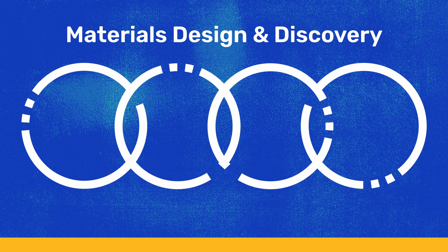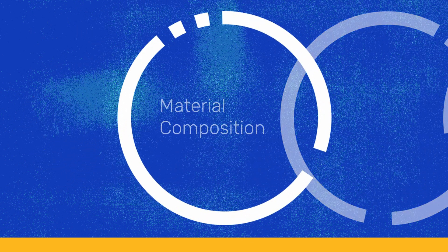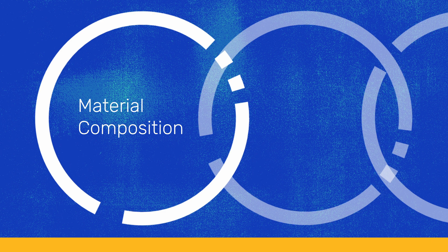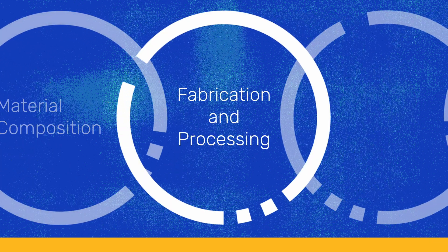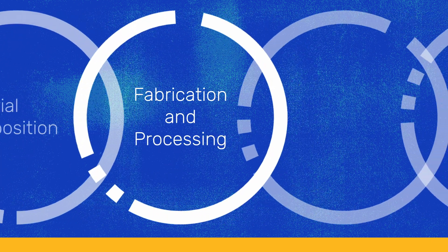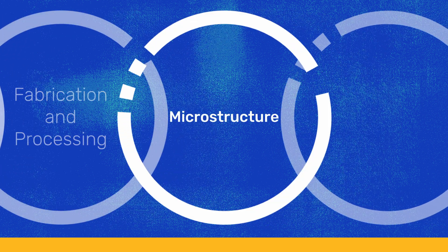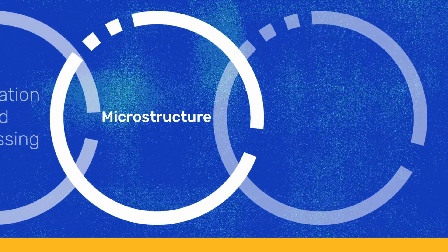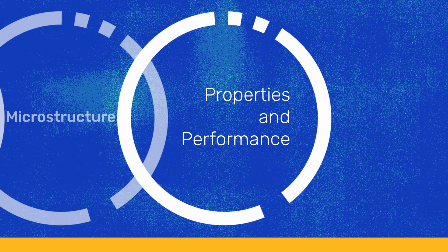We care about the materials composition and how it will be associated with different types of processing. Different types of processing techniques will generate different configurations of the microstructure, and eventually you have to care about the consequences of the materials properties.